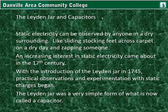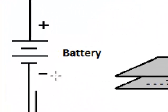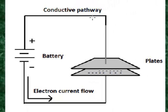The Leyden jar was a very simple form of what is now a capacitor. The capacitor charges up to the source voltage — for example, if there's a 9-volt battery, here's the symbol for a battery, the capacitor will charge up to 9 volts.